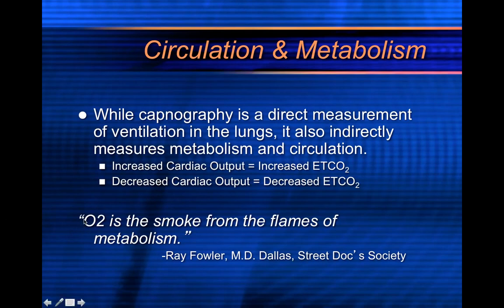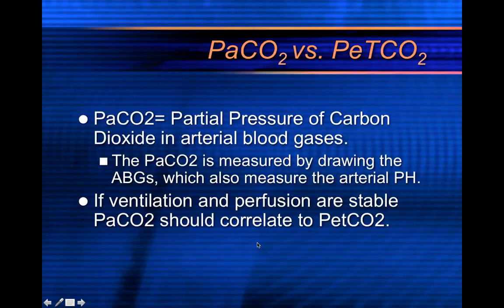CO2 is the smoke from the flames of metabolism — CO2 is the exhaust from the exhaust pipe. It's the product of combustion at the cellular level. If your heart was your motor and you're using up gasoline — that would be oxygen — and producing exhaust — that would be your CO2. Kind of look at it like that.